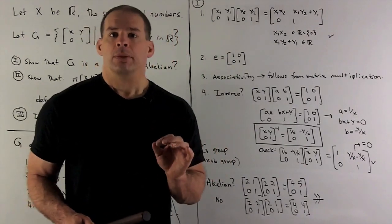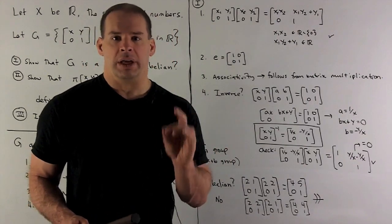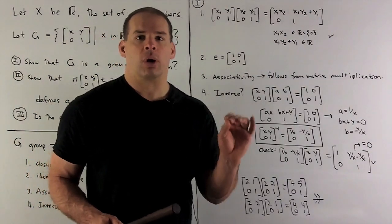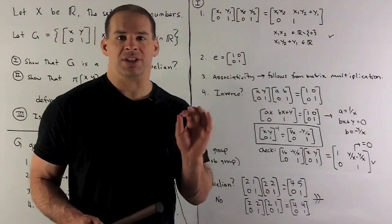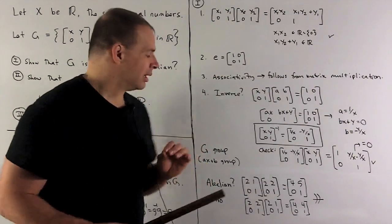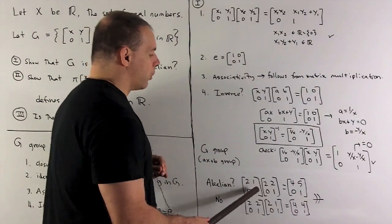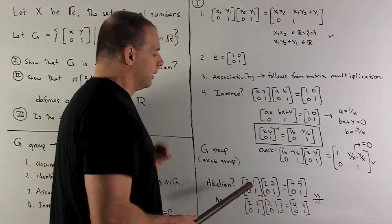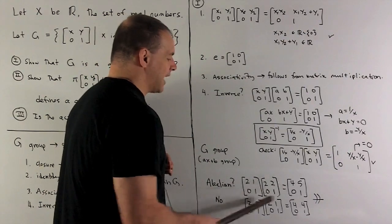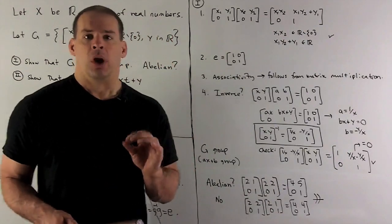So G is a group. Is it abelian? Well, if it was going to be abelian, we'd have to come up with an argument for it. If it's not going to be abelian, I just need to find two matrices that don't commute with each other that are in our group. So we're going to pick two, one, zero, one and two, two, zero, one, multiply it in the different orders. And then what we note, what comes out is not going to be equal. So our group is not abelian.